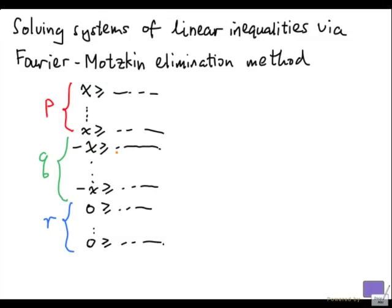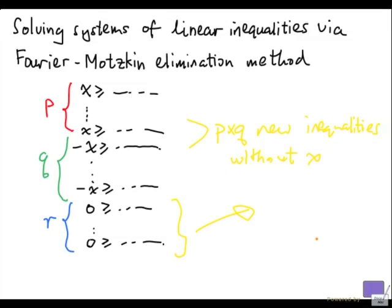Remember that minus x greater than or equal to something is the same as saying x is upper bounded by the negative of the right-hand side. So we want every upper bound to be at least every lower bound. Combining these p and q inequalities, what we get is p times q new inequalities without x. And of course, we have to copy the r inequalities over.